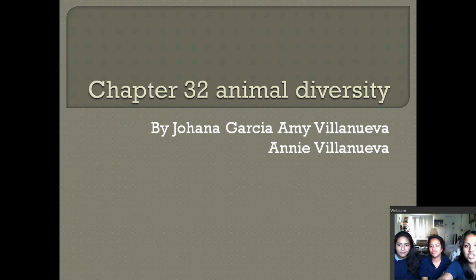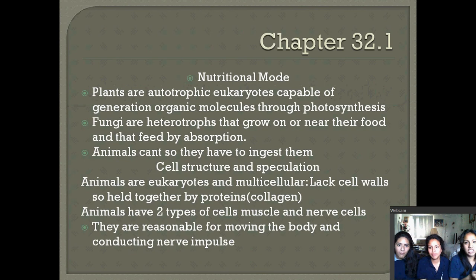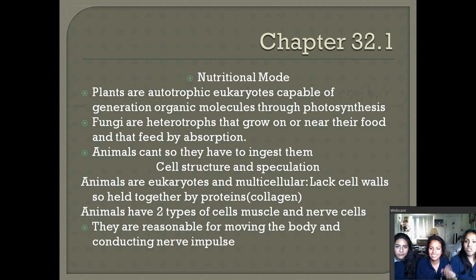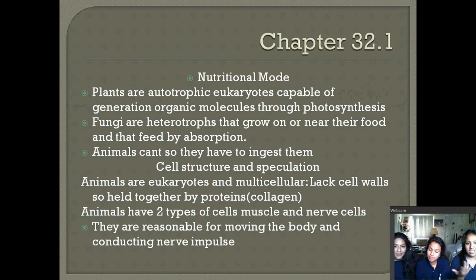So my section was 32.1, and the first thing we're going to talk about is plants, fungi, and animals, and how they get their food. Plants are autotrophic eukaryotes capable of generating organic molecules through photosynthesis. Fungi are heterotrophs that grow on or near their food and just absorb it. Animals ingest food by eating, because we can't produce our own food.